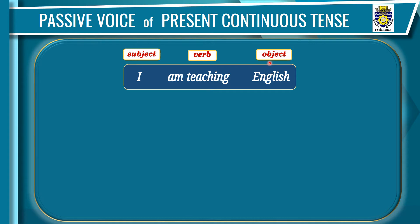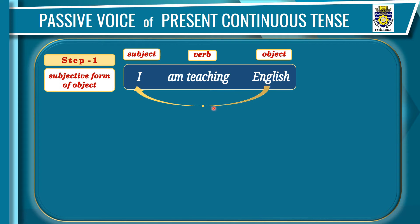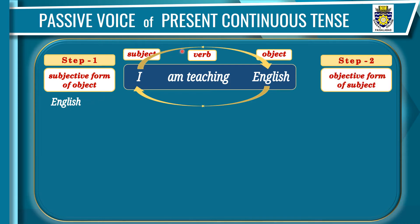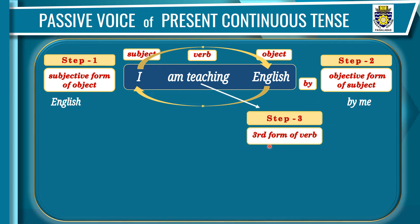I'll tell you four steps to change this into passive voice. Step one: the object will take the place of the subject; write the subjective form of the object — 'English' stays the same as it is a noun. Step two: the subject takes the place of the object; write 'by' then the objective form of the subject — 'I' becomes 'by me'. Step three: write the third form of the verb — 'taught'.